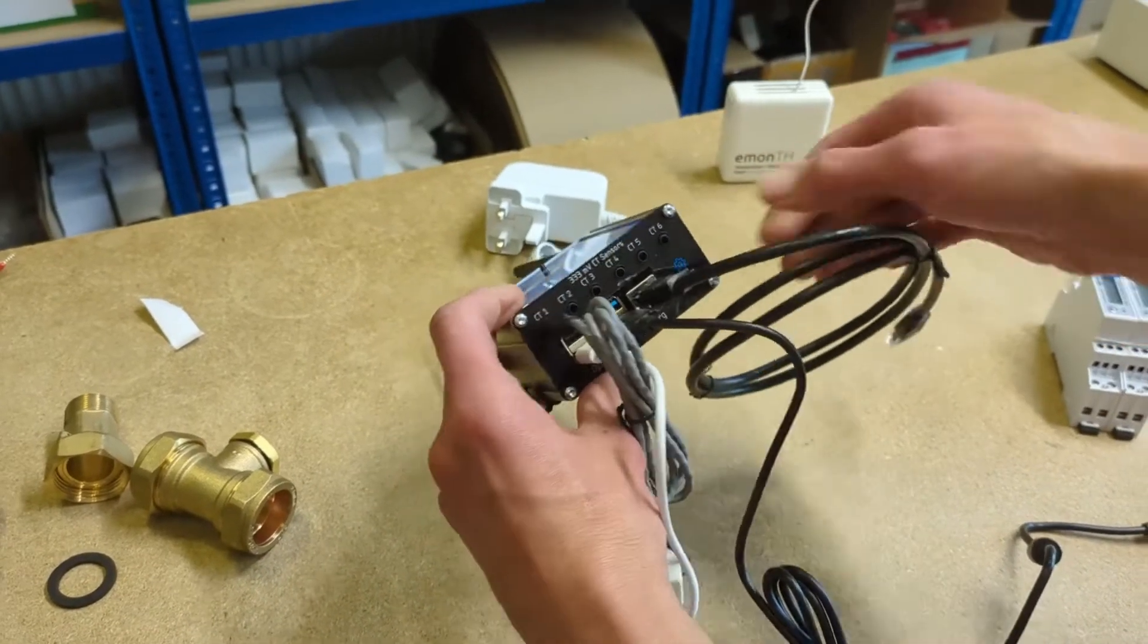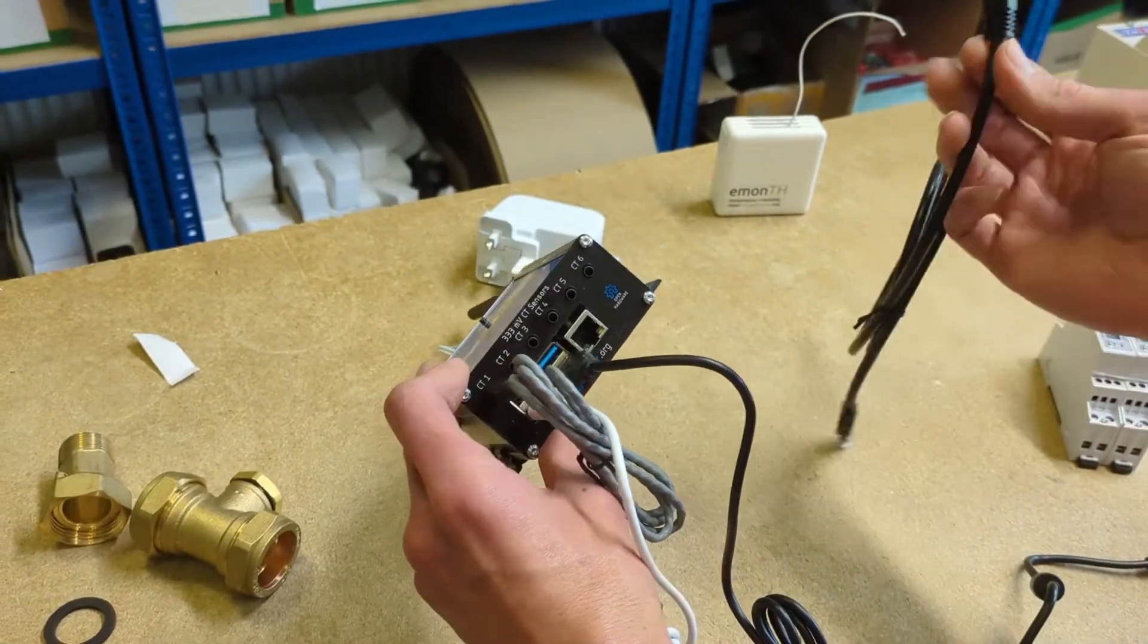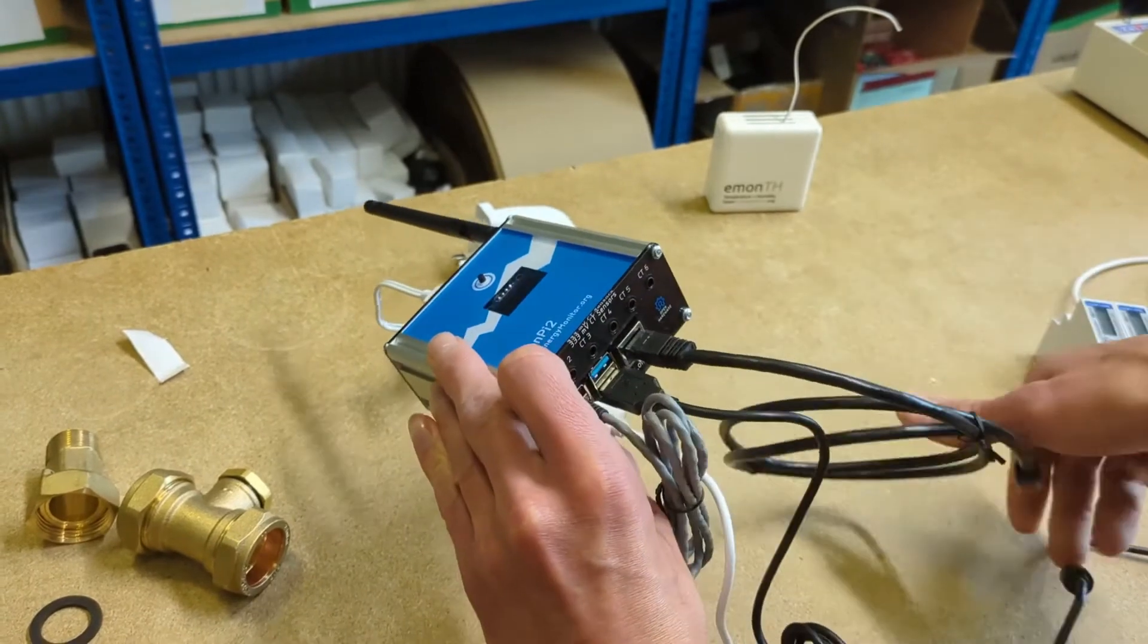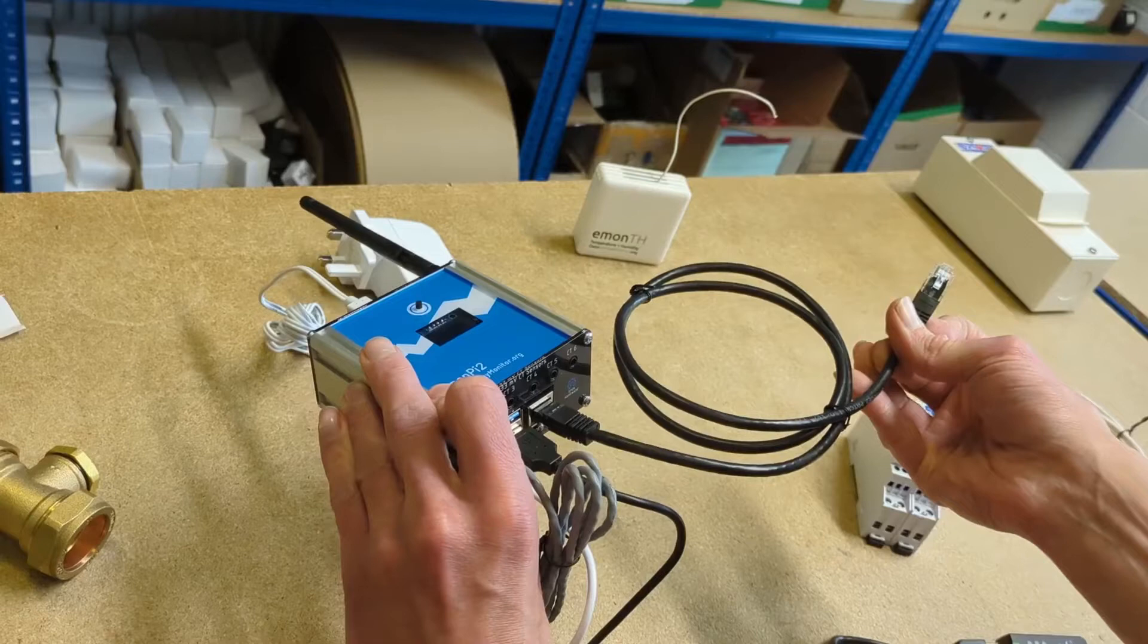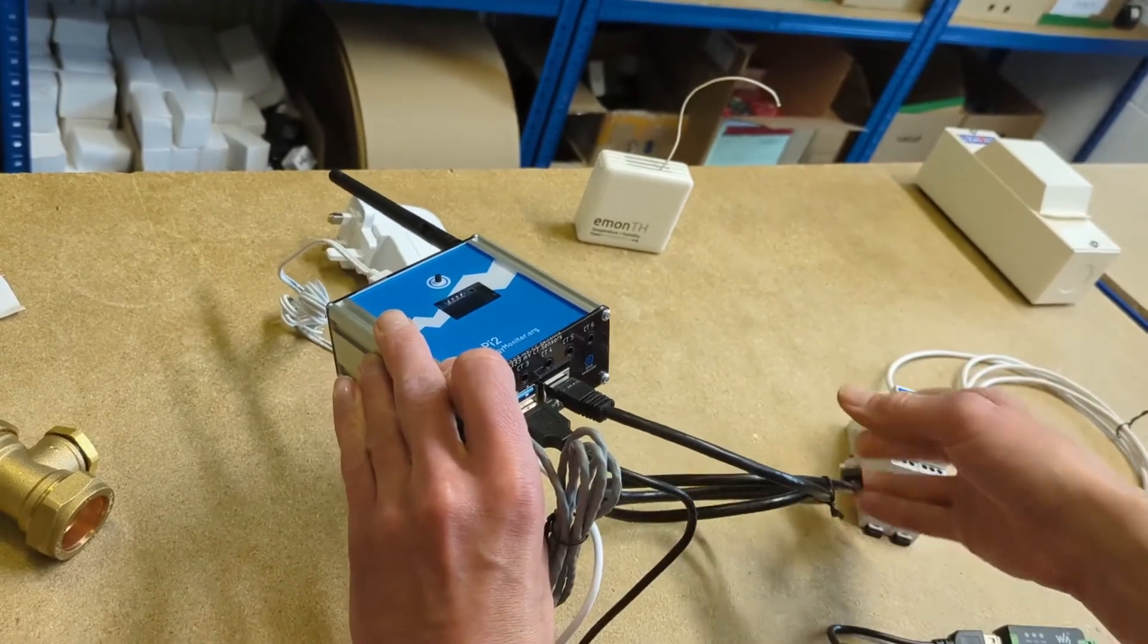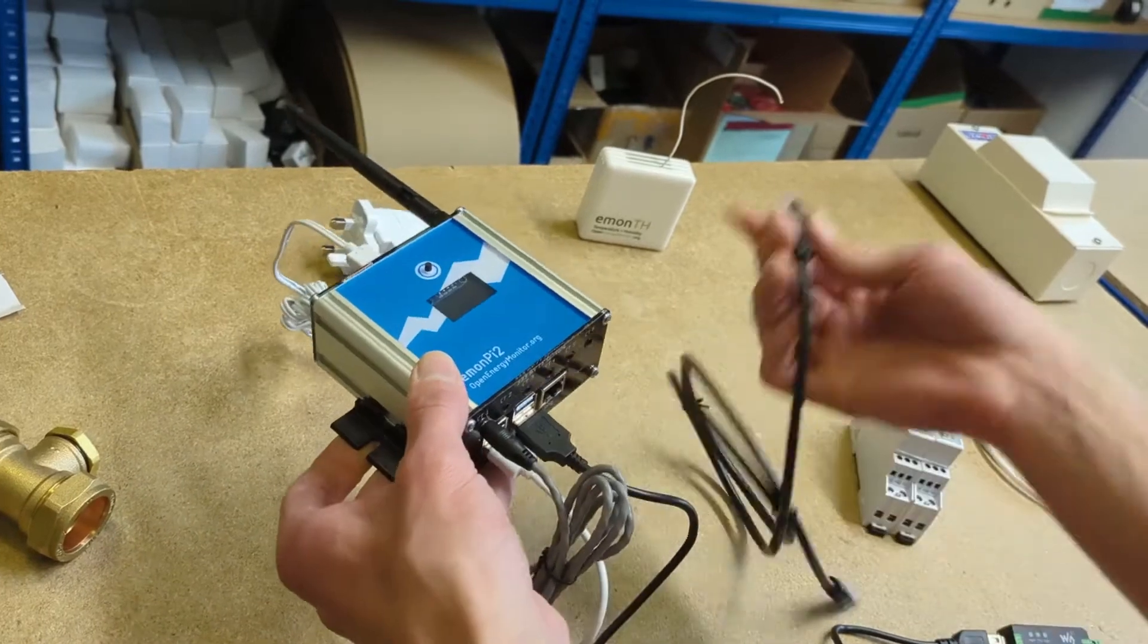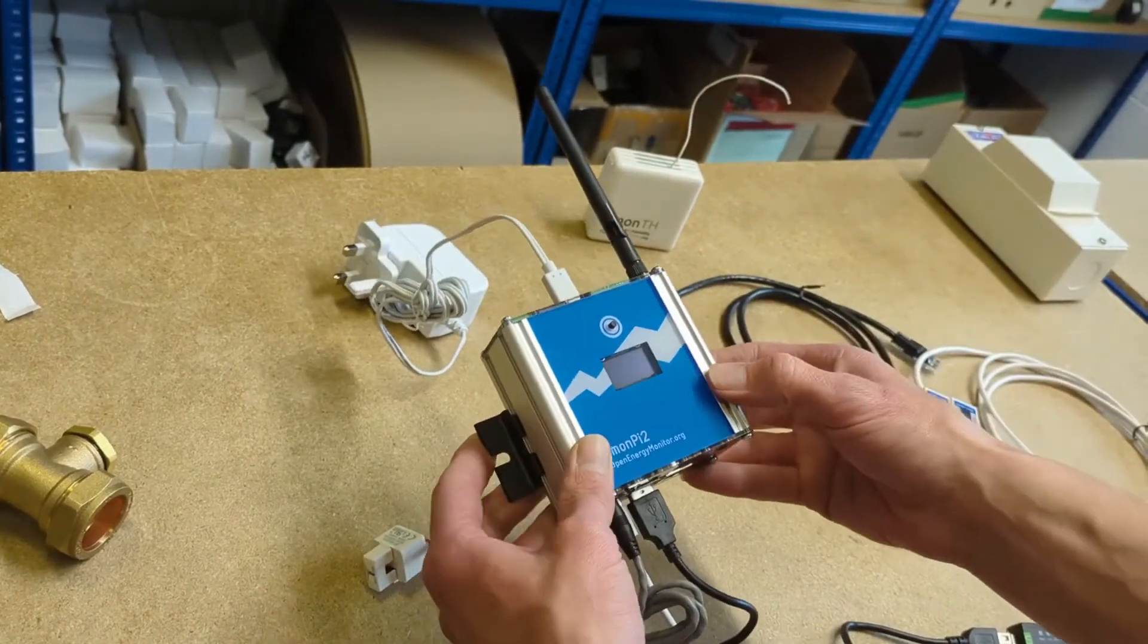The electricity meters then go into a USB to RS-485 reader, which connects into the Emun Pi data logger via USB connection. The other connections we have is an Ethernet port to connect this device to the Internet. You can either use Ethernet or Wi-Fi. Ethernet is preferable because it's more reliable. You don't have to deal with the customer changing their Wi-Fi network. But if Ethernet wasn't available, you can leave that disconnected and just use Wi-Fi.